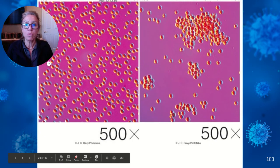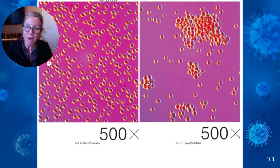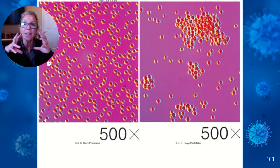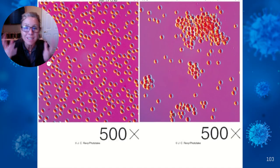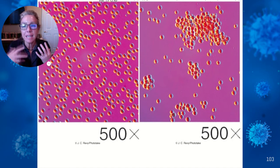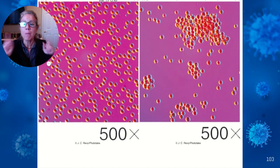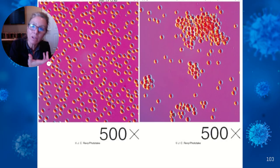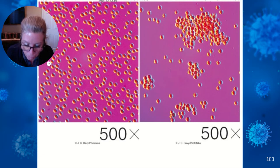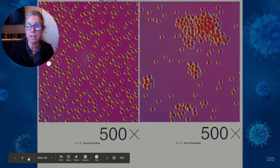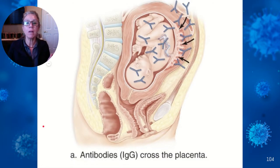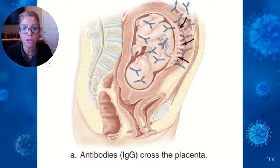If you receive mismatched blood, IgM immunoglobulin causes the cells to coagulate. You can actually receive mismatched blood one time if you're in an emergency — it takes 10 to 14 days to develop that immune response. But the second time, you'll have memory cells and will attack it, which can be really bad. You will attack any blood that you can build antibodies against.